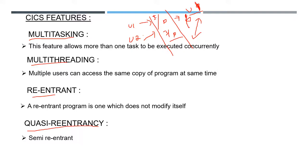Executing one or more tasks concurrently is known as multitasking.